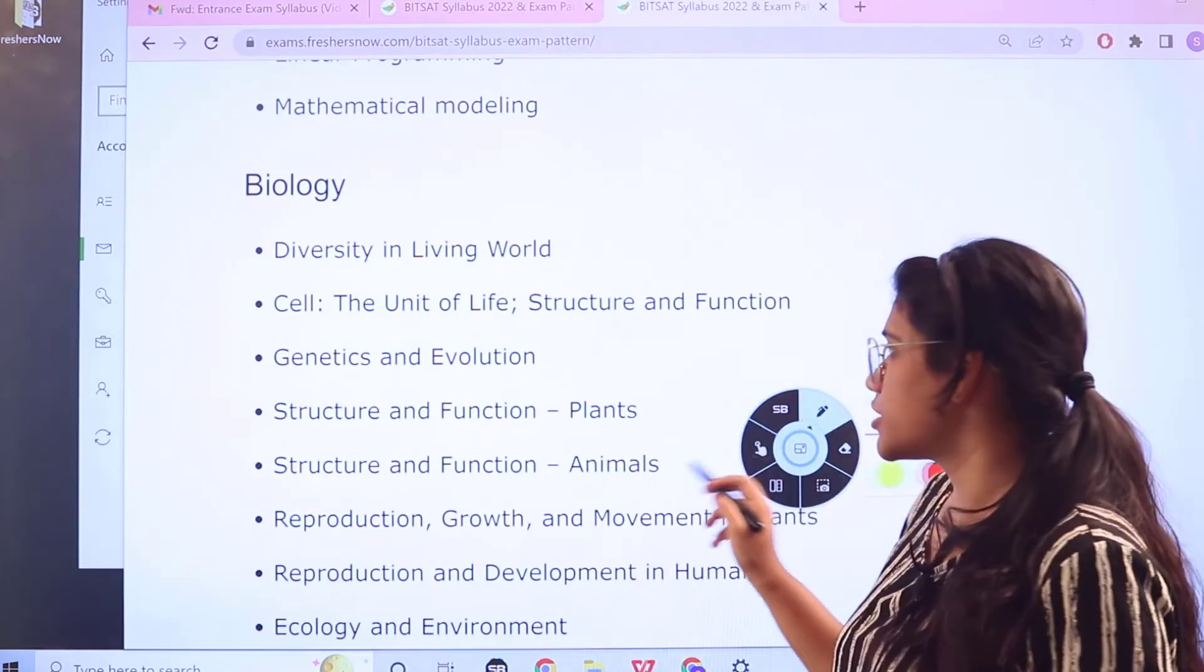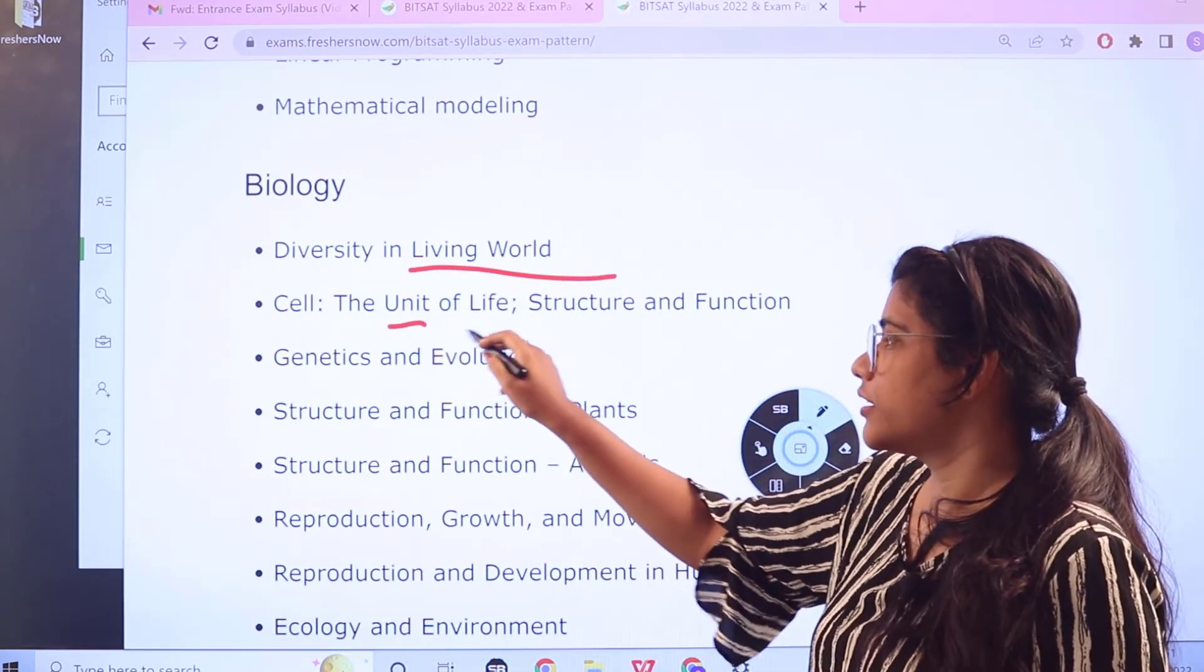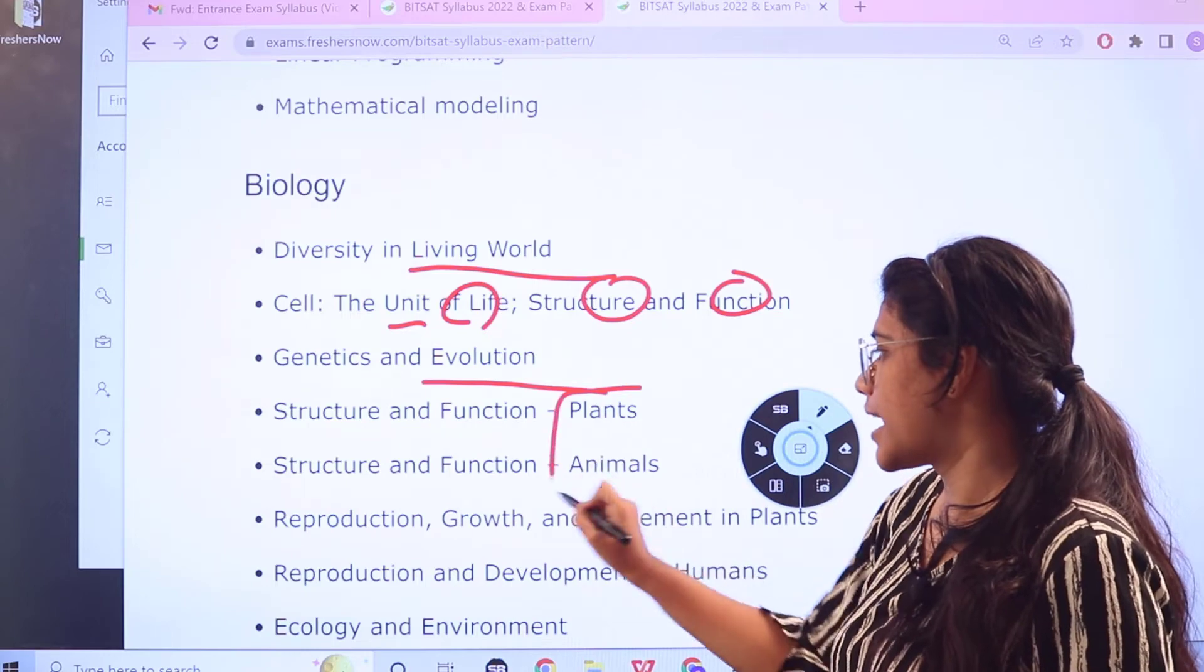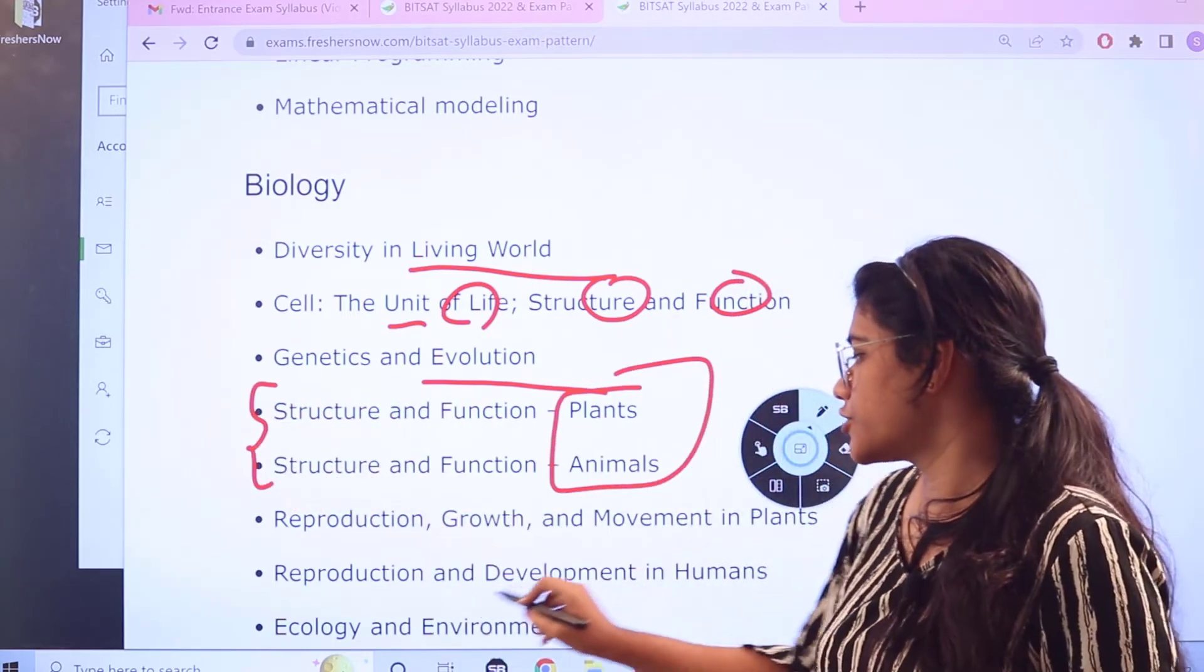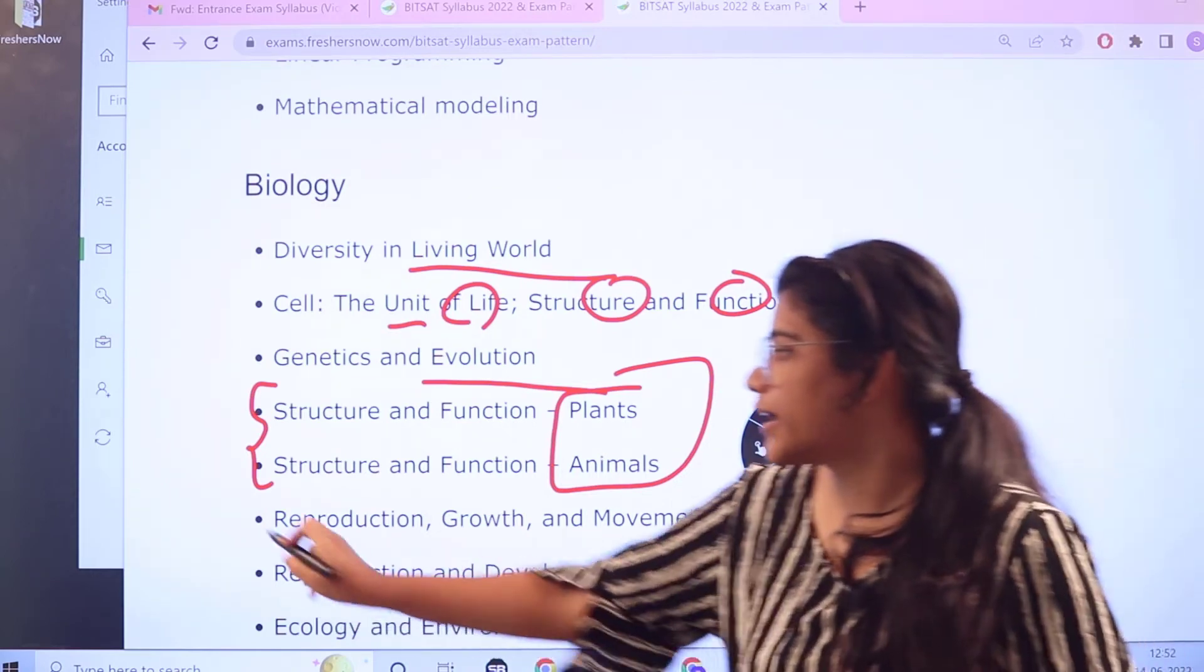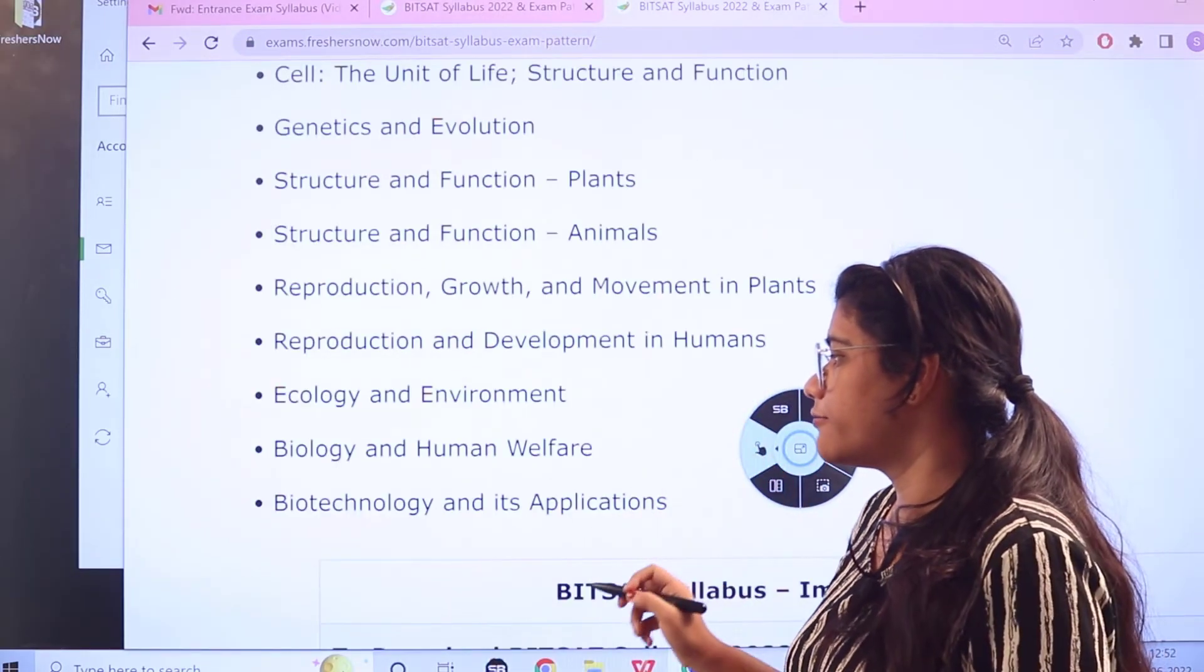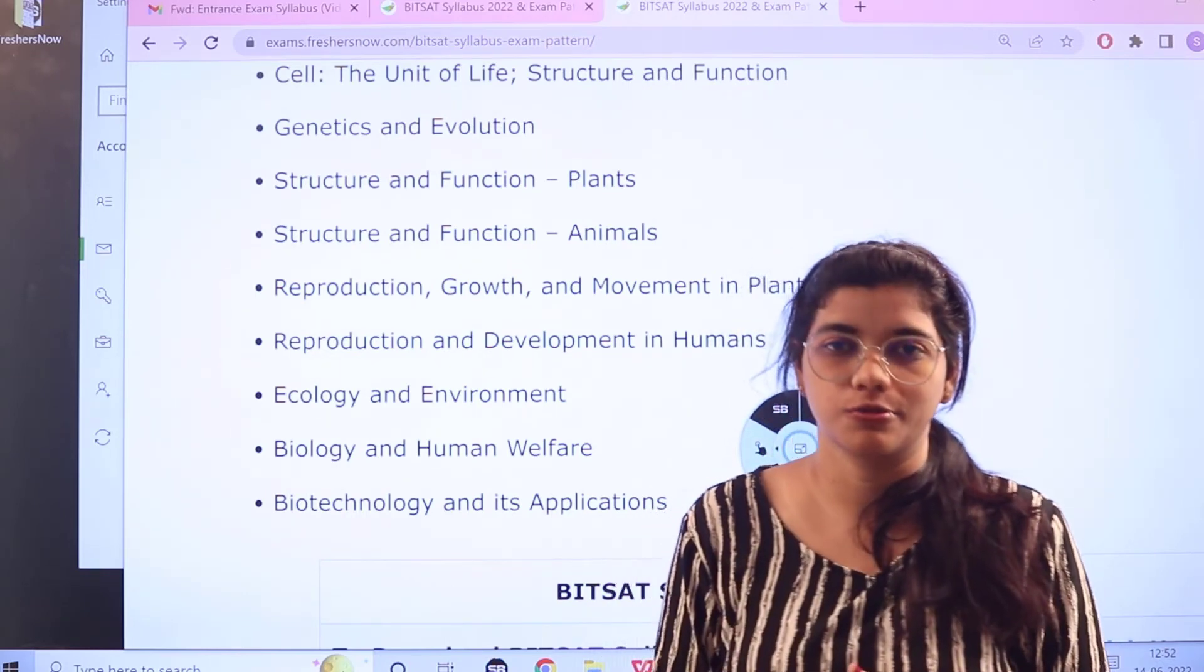Now candidates choosing biology, diversity in living world, cell, the unit of life structure and functions, genetics and evolution, the structure and functions of plants and animals. So here these are interlinked topics. Then reproduction, growth, development in plants as well as in humans. So again, you have the interlinked kind of sections here. Then you have ecology and environment, biology and human welfare, biotechnology and its application, the components and its usage.